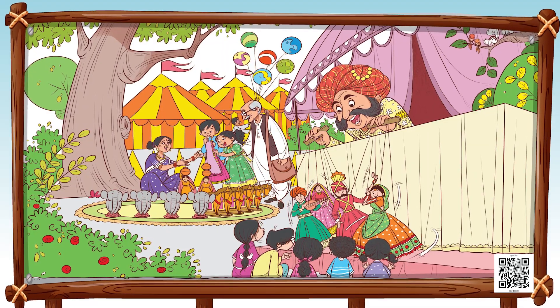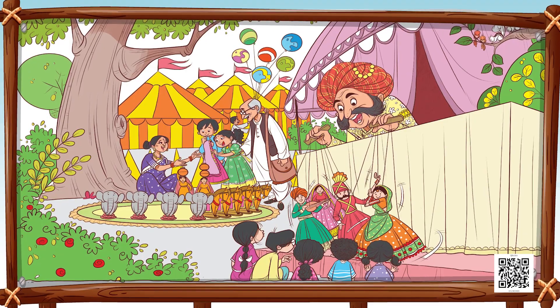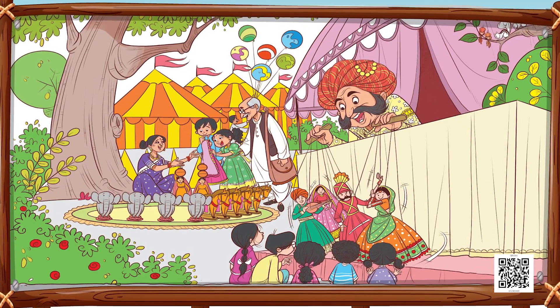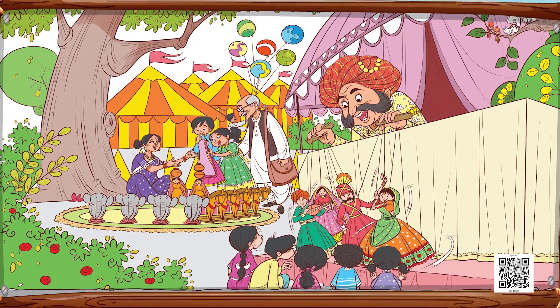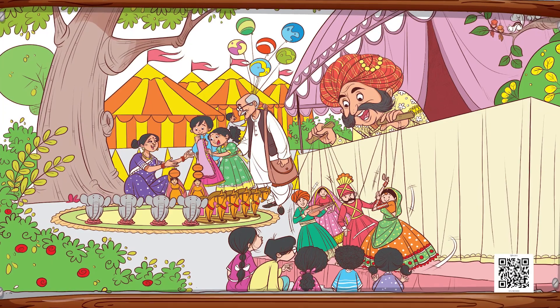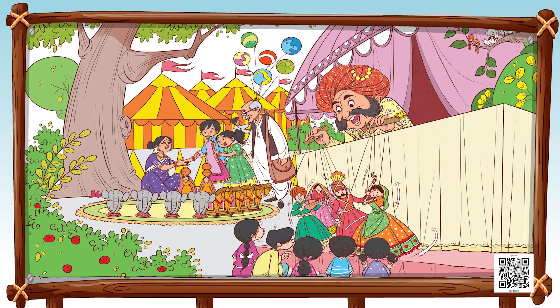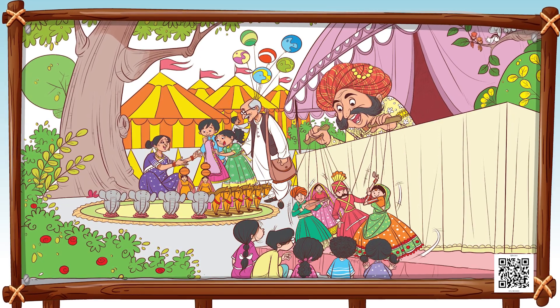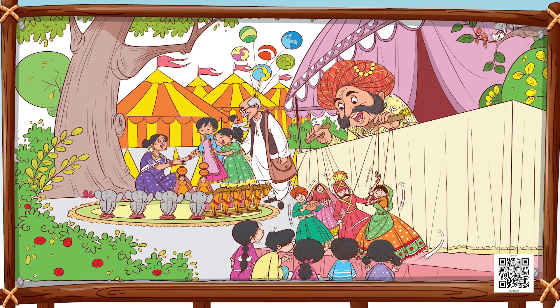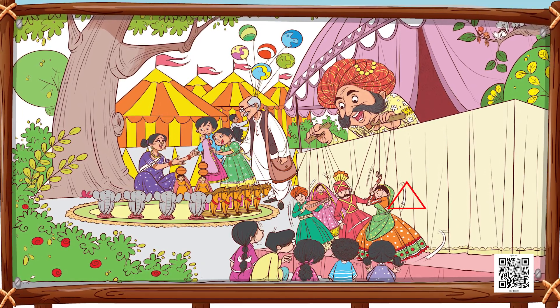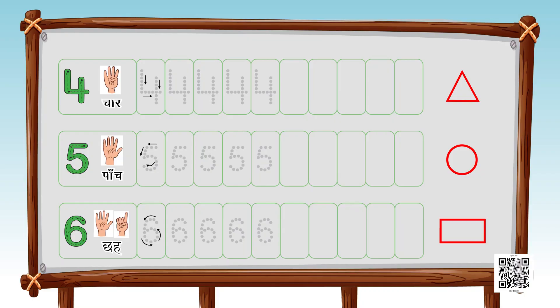The next picture is of a fair. Look what we have here — balloons, puppets, a puppeteer, and kids enjoying in groups. Draw a triangle around the objects which are four in number. Look at the picture and write down four on your sheets. For example, we have four puppets, so we draw a triangle and write the number four.